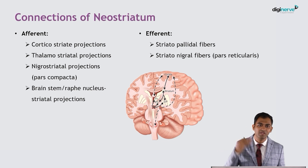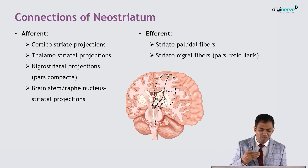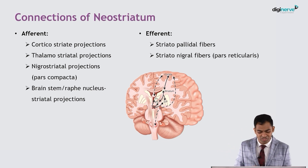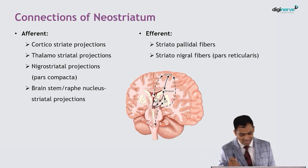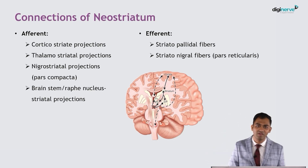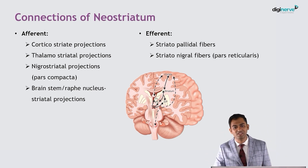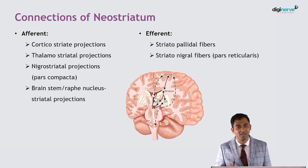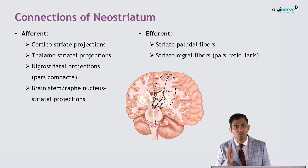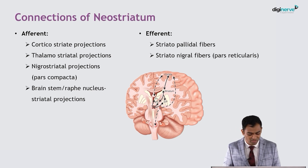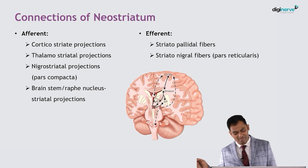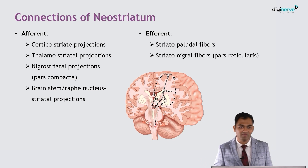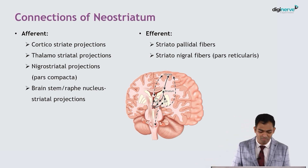The striatum will have afferents from the cortex, called the corticostriate projections. It will have afferents from the thalamus, called the thalamostriate projections. It will have afferents from the substantia nigra — mainly the pars compacta — the dopaminergic projections called the nigrostriatal projections, and also afferents from the brainstem raphe nuclei, called the raphe-striatal projections.